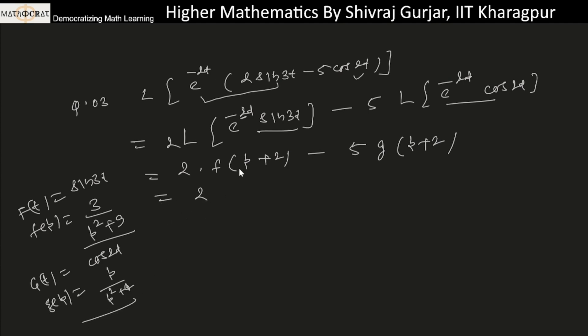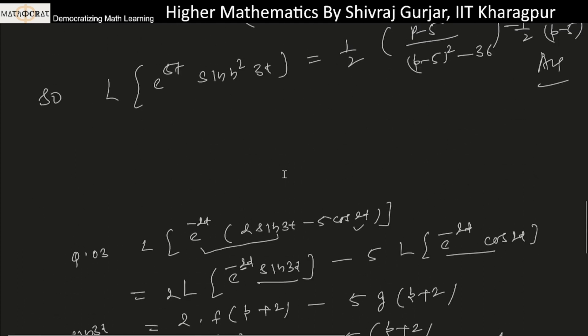So just put the values: 2 times f(p plus 2) will be 3 divided by (p plus 2) squared plus 9, minus 5 times g(p plus 2), where p becomes p plus 2, giving (p plus 2) divided by (p plus 2) squared plus 4. So this is the answer. This is easy once the concept is understood.